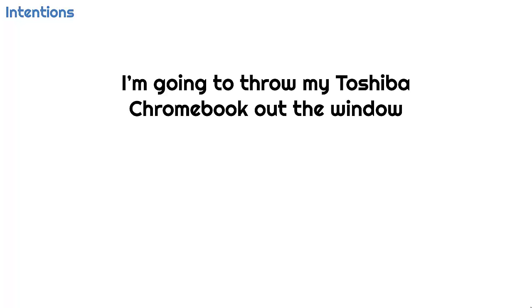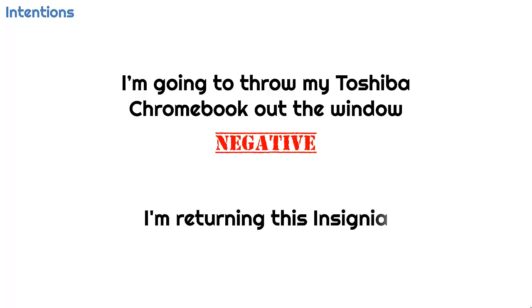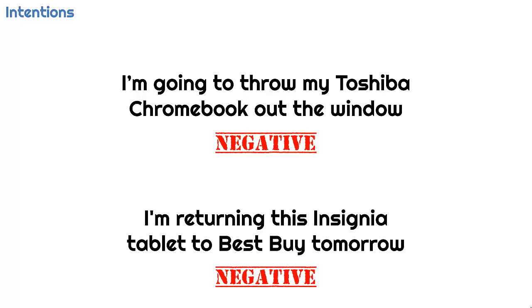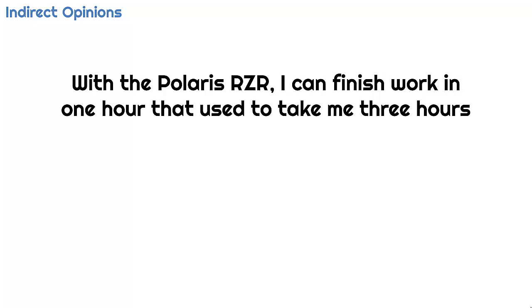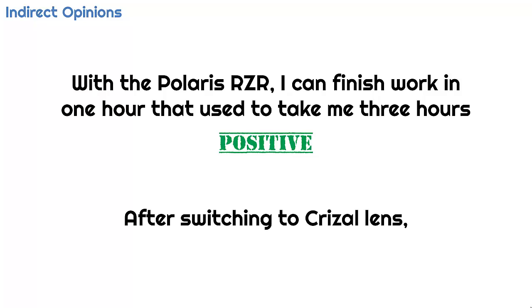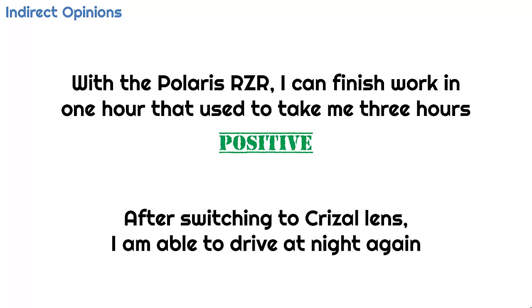Opinions can be expressed as intentions, like these negative sentences. 'I'm going to throw my Toshiba Chromebook out the window.' We humans know this is a negative statement, even though it doesn't contain a sentiment word. 'I'm returning this Insignia tablet to Best Buy tomorrow.' This is also negative sentiment — it shows the intention of the author to return the product to the store. Indirect opinions can also occur, typically expressed as benefits or issues of entities. 'With the Polaris Razor, I can finish work in one hour that used to take me three hours.' This is obviously positive, even though it doesn't contain sentiment words. 'After switching to Grisal lenses, I am able to drive at night again.' Another positive indirect opinion without a sentiment word.